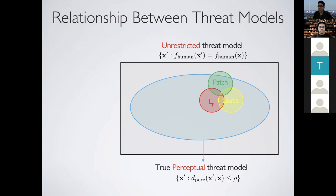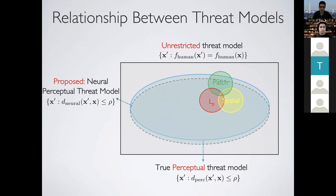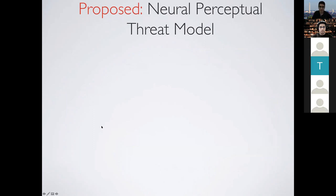Our proposed approach is a top-down view: instead of a bottom-up approach, we directly approximate the bigger set of all imperceptible adversarial examples. We use neural networks to approximate the true perceptual distance, defining a neural perceptual threat model as the set of all examples with neural perceptual distance between x and x-prime within a particular threshold. The key idea is to use deep networks to approximate true perceptual distance in the adversarial threat model.